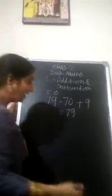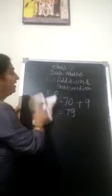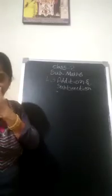So, it will become 79. Okay? Now, like that, we are adding 70 plus 9, 79. Like that, we are adding.